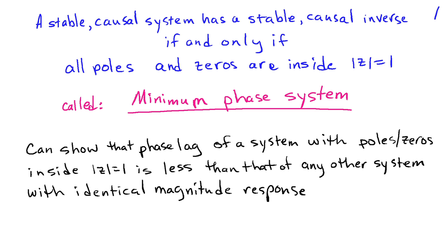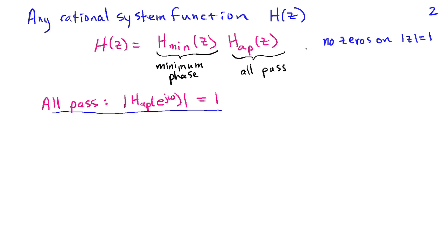It turns out that the phase lag of a system with its poles and zeros inside the unit circle is less than that of any other system that has identical magnitude response. That can be shown using all-pass systems, which we'll look at in a moment. It also turns out that we can write any rational system function H that doesn't have zeros on the unit circle as a product of a minimum phase system, H_min(z), and an all-pass system, H_allpass(z). This decomposition will be useful when we consider trying to find approximate inverse systems for H(z).